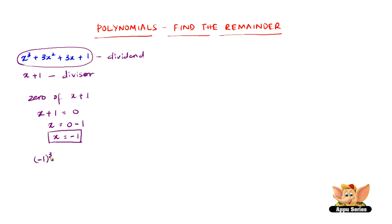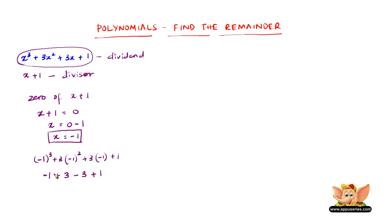Let us do that. Minus 1 the whole cube plus 3 into minus 1 the whole square plus 3 into minus 1 plus 1. Minus 1 the whole cube is minus 1. Minus 1 the whole square is plus 1, therefore 1 into 3 is 3. 3 into minus 1 is minus 3 and we write plus 1 as it is. The negative 1 and the positive 1 get cancelled, and the positive 3 and the negative 3 get cancelled.